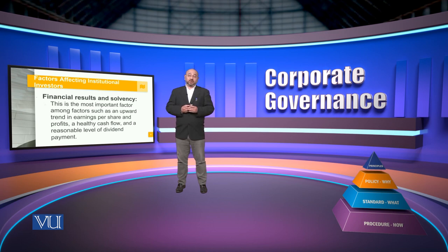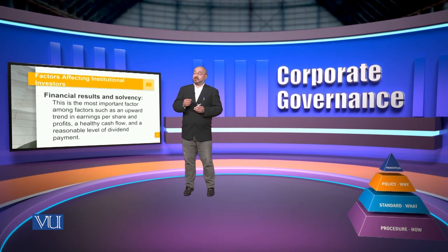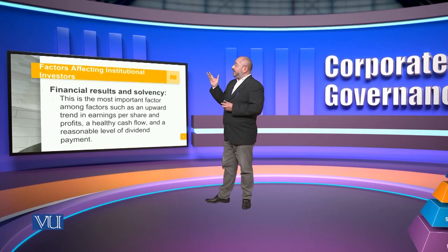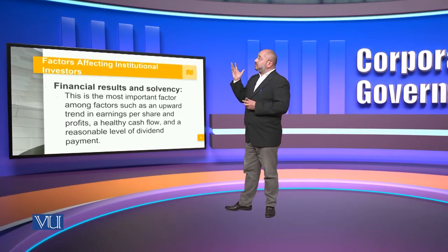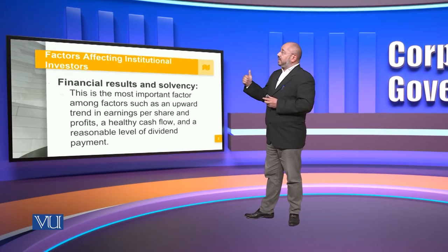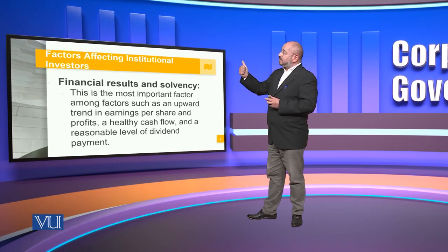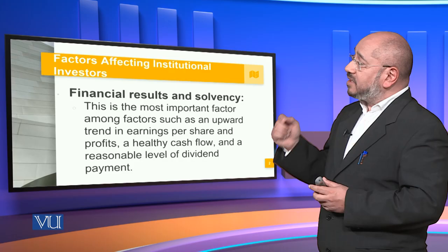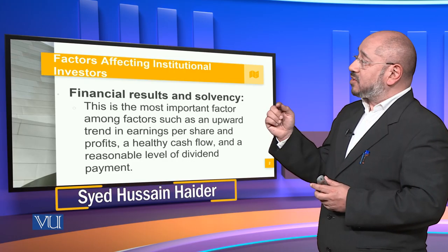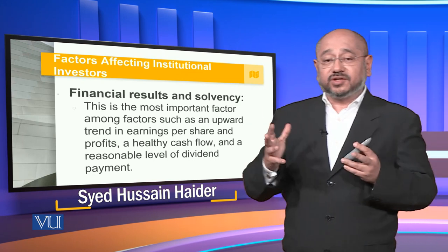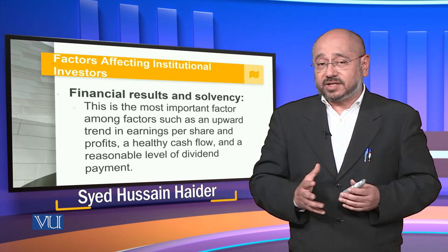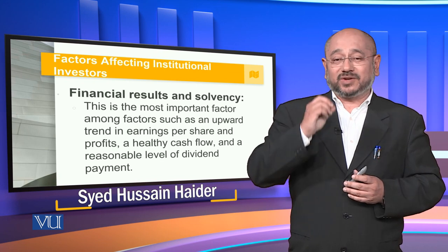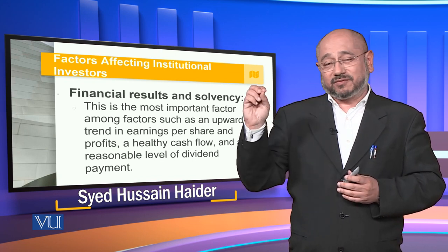The first and most important factor is financial results and solvency — the primary concern of any investor. This includes an upward trend in earnings per share and profits, a healthy cash flow, and a reasonable level of dividend payments. These three considerations in the context of financial results represent the primary interest of the institutional investor.